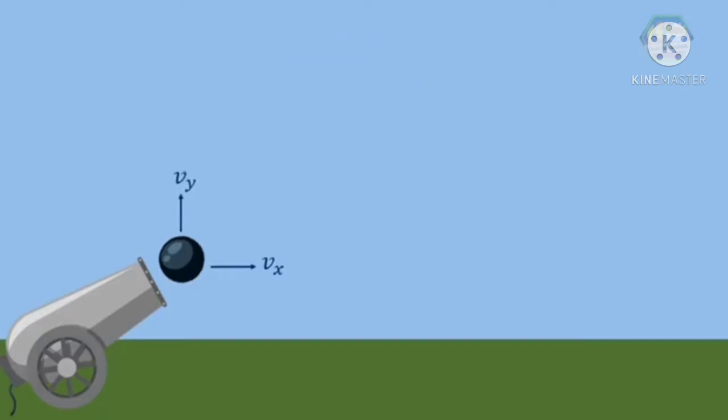This means that the cannonball is moving upward while moving to the right. When the cannonball moves upward, the X direction is constant or remains the same as the initial value, while the velocity along the Y direction is approaching zero.